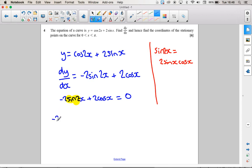So that's what I'm going to substitute in. I've got minus 2 times 2 sin x cos x. Now that doesn't look terribly helpful either. So let's change that to minus 4 sin x cos x.